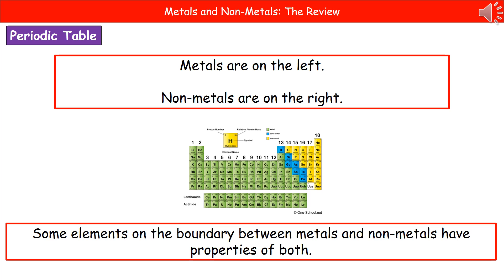On the right-hand side are the non-metals, shown as the yellow-coloured ones. But we do have a small number of elements on the boundary between the metals and the non-metals that have properties of both, and those are shown in that little blue section in the diagonal.